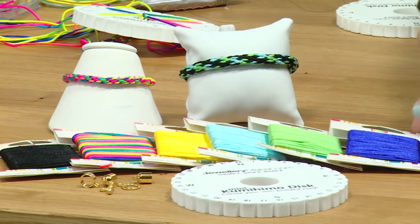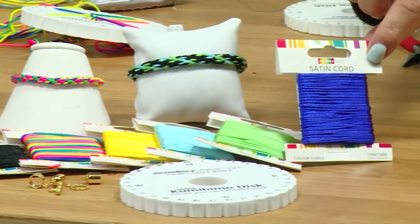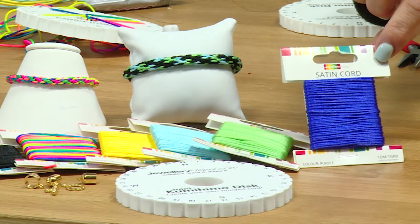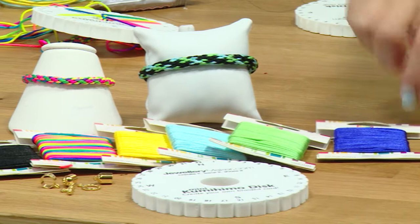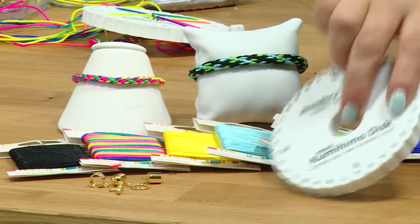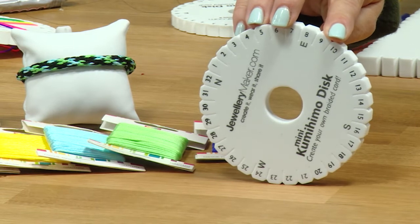So in your kit you will get a selection of different colors of your cords. You can see we've got colors ranging from the blues to the greens and we have a multi-colored cord as well. You will also get your kumihimo disc which is what you're going to need to be able to create this beautiful braid.